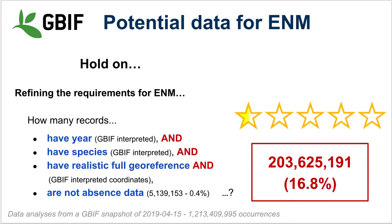The total number of occurrence records usable for ecological niche modeling in theory is approximately 203 million — only 16.8% of all records in GBIF. eBird alone is more than double that number, but those are not available via GBIF in that form. This count excludes absence data; interestingly, there are about 5 million records, roughly 0.4% of the data, that have absence rather than presence.